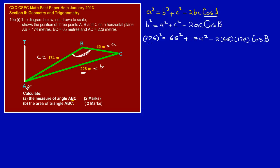Working this out on your calculator: 226² = 51,076. Then 65² = 4,225, and 174² = 30,276. Multiplying −2 × 65 × 174 gives us −22,620. So our equation becomes: 51,076 = 4,225 + 30,276 − 22,620·cos(B).